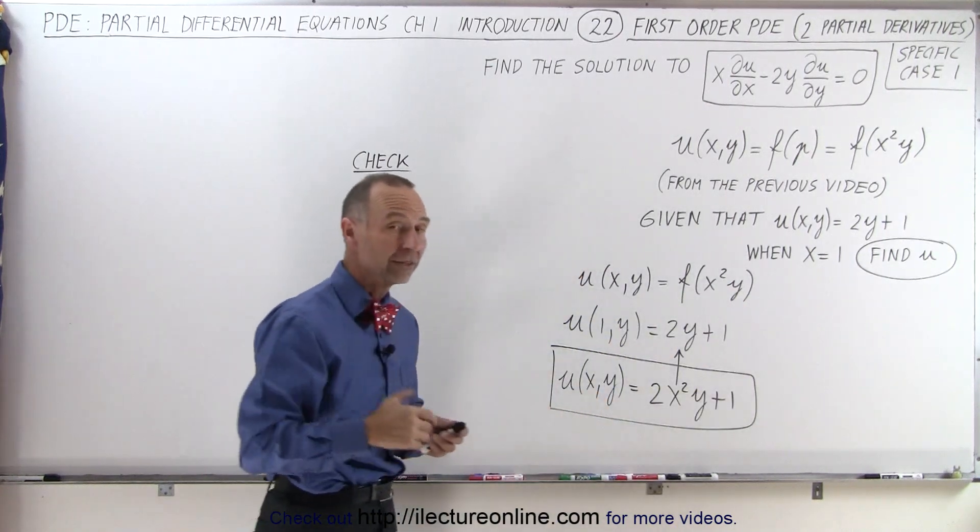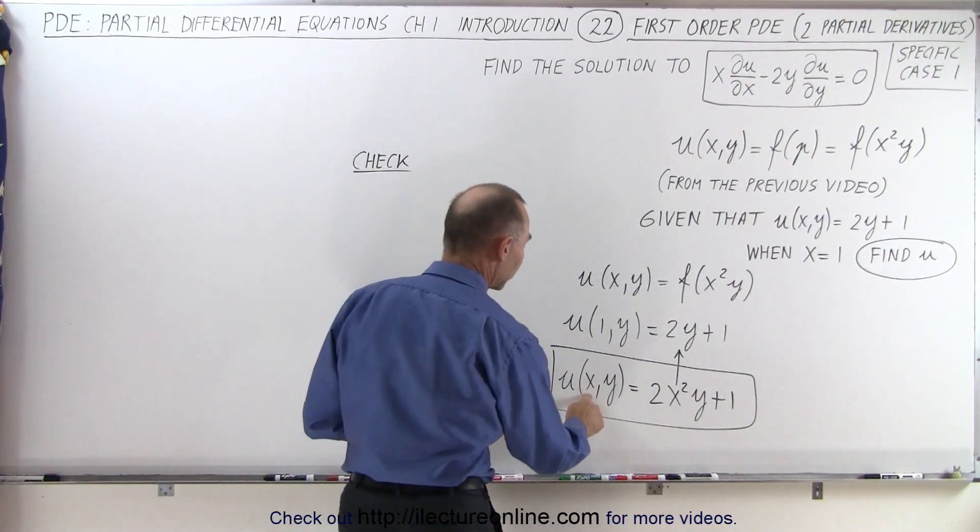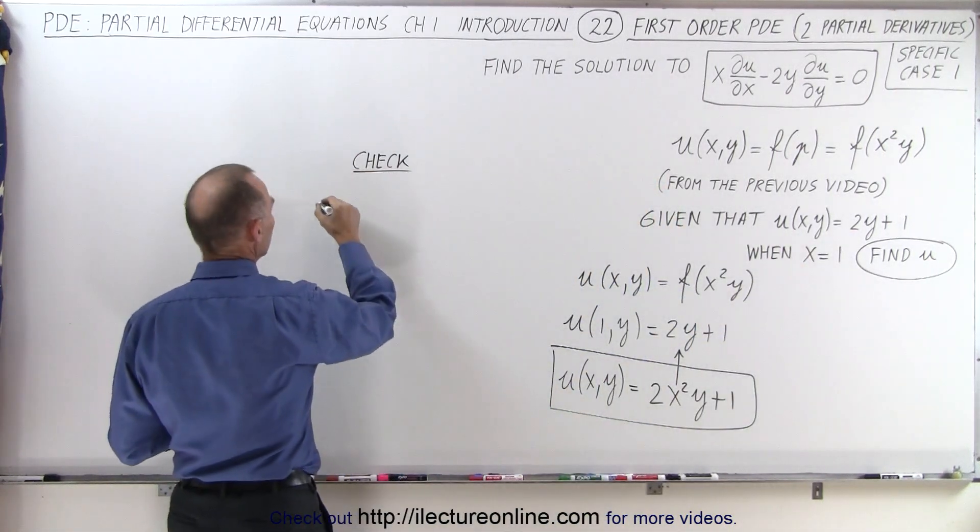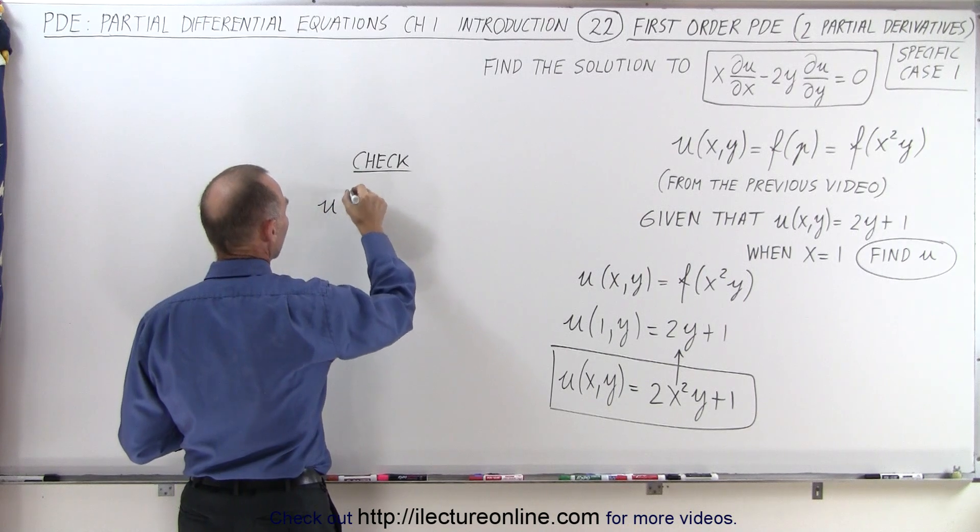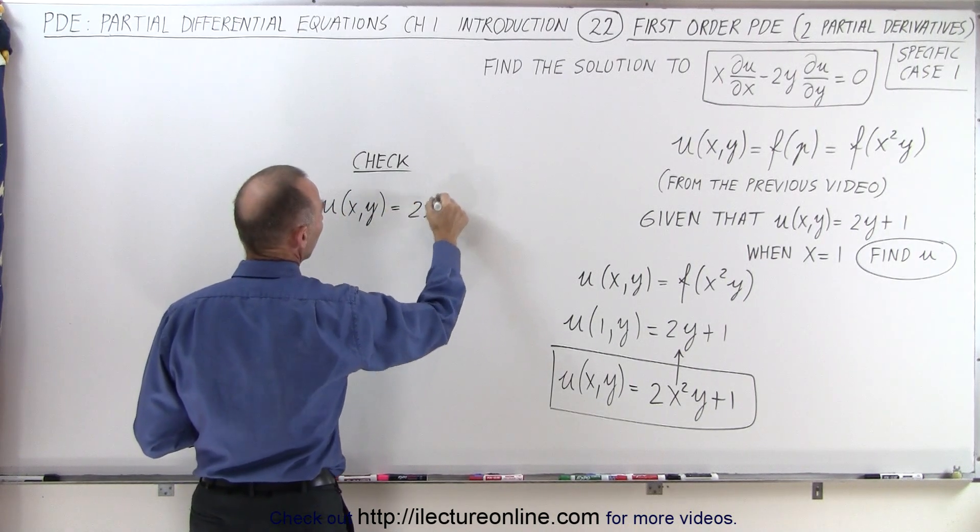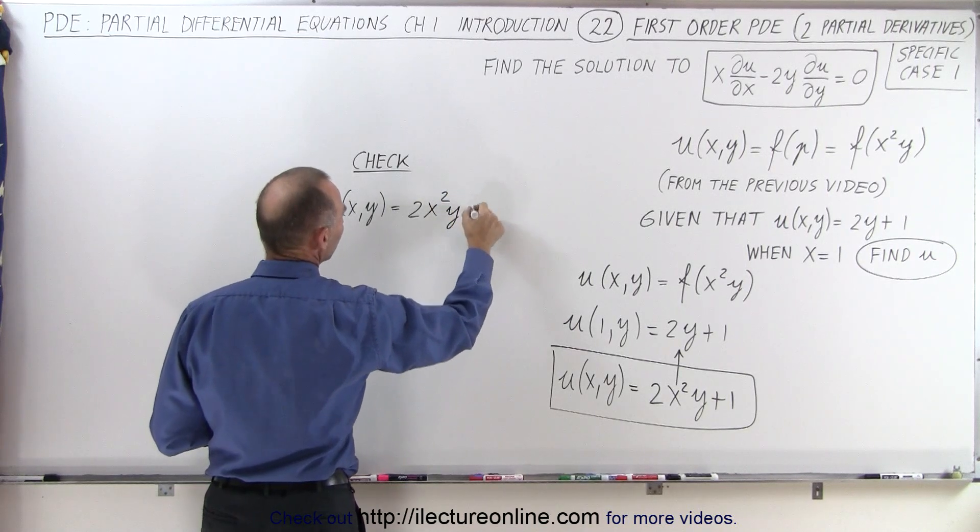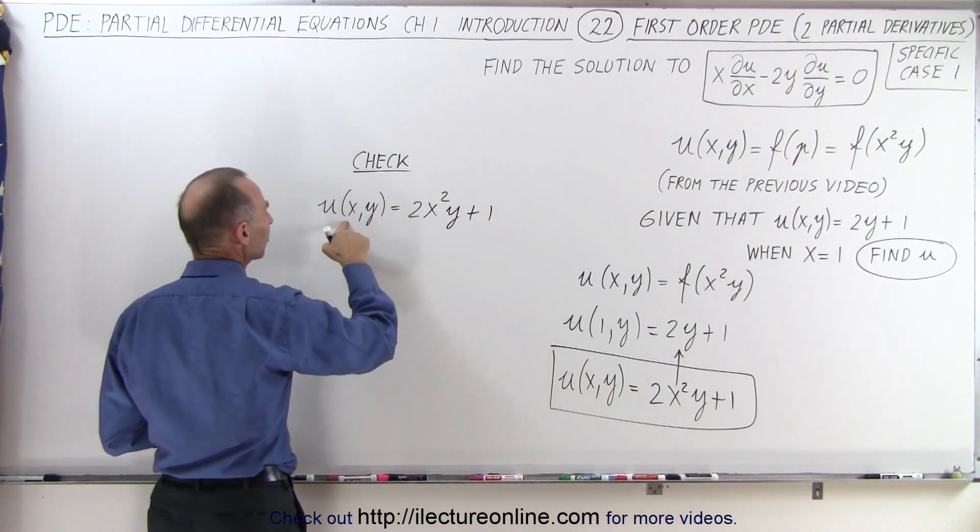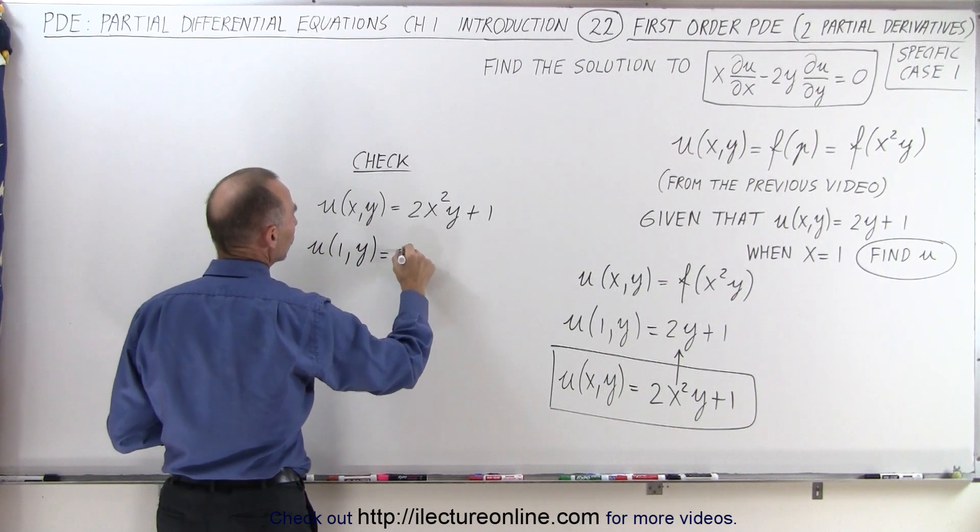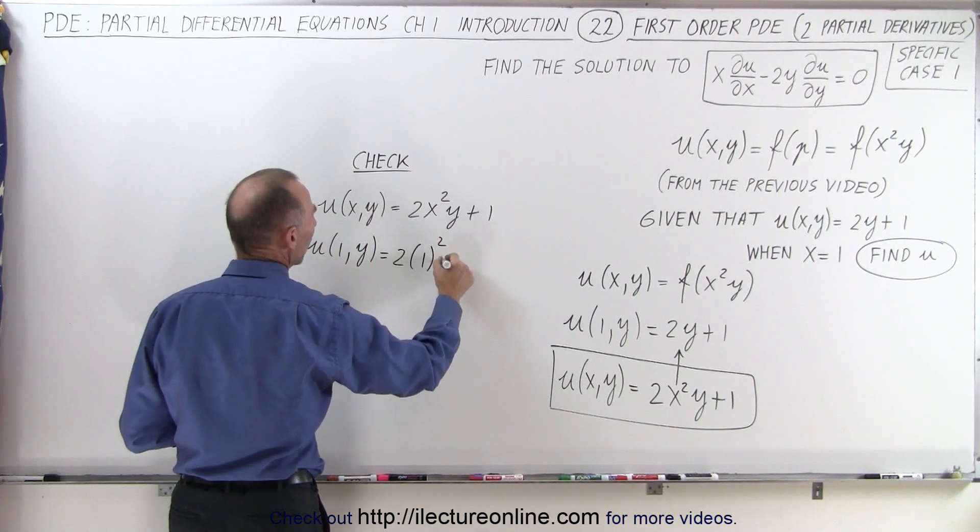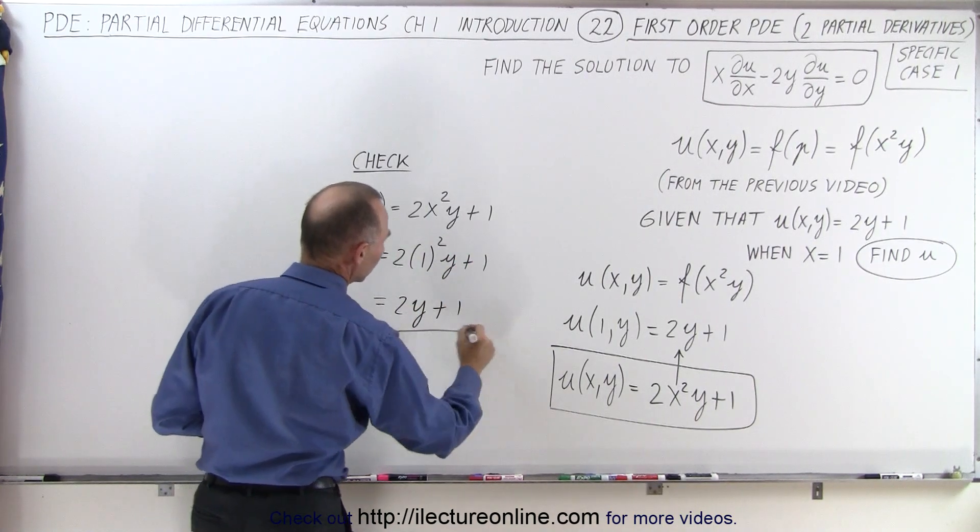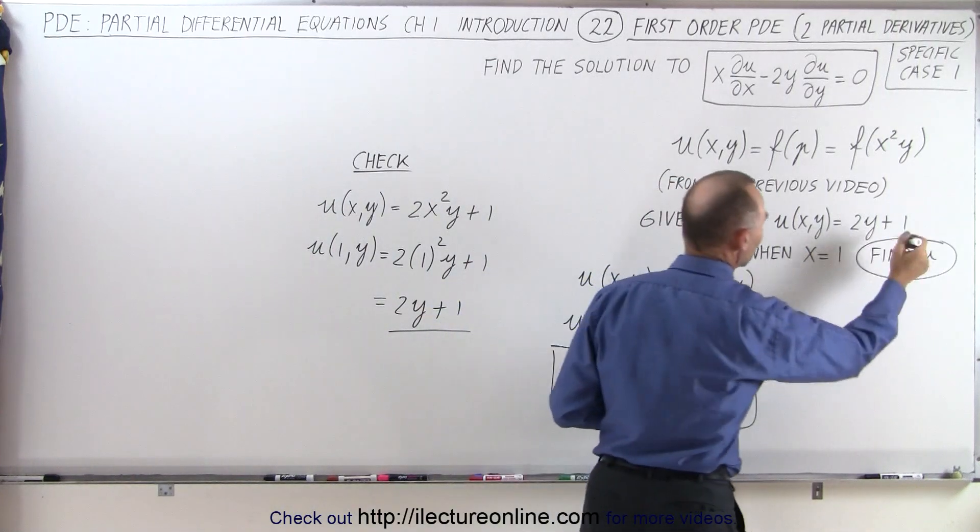The second requirement is that if we let x go to 1, we should get back 2y plus 1. So let's do that. So u of xy, if we assume that is equal to 2 times x squared y plus 1, now if we replace x by 1, we get u of 1,y is equal to 2 times 1 squared y plus 1, which is equal to 2y plus 1, which is the same as what we had over here.